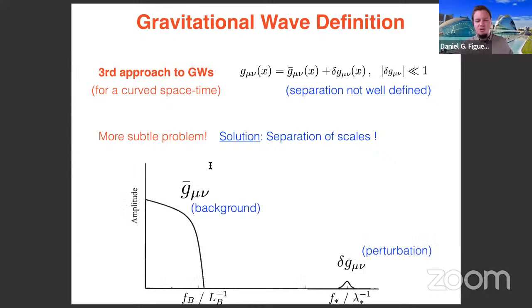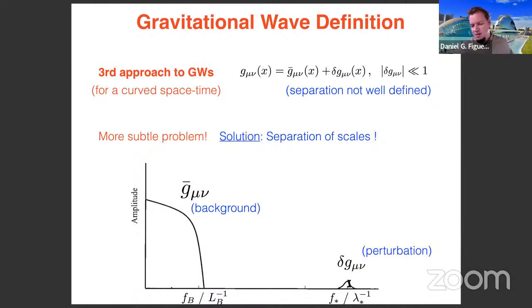The solution proposed in the early 1960s is a separation of scales. Not only do we require a hierarchy between the amplitude of the background metric and the perturbation, but we also require that the perturbation has a wavelength much shorter than the typical length scale of variation of the background metric — equivalently, the perturbation lives in a high-frequency domain versus the low-frequency domain of the background metric.